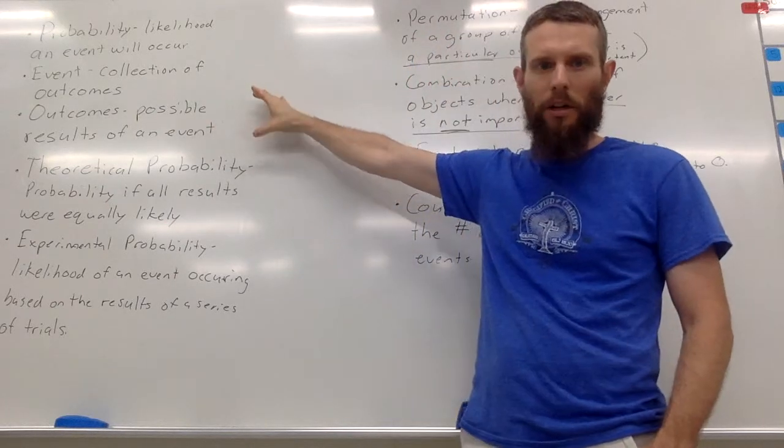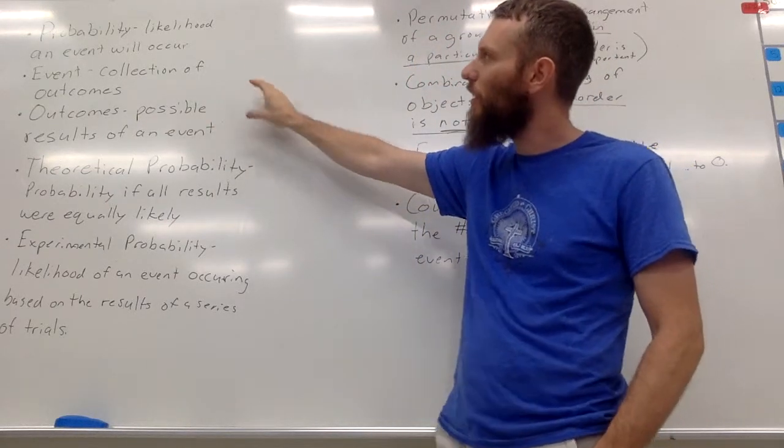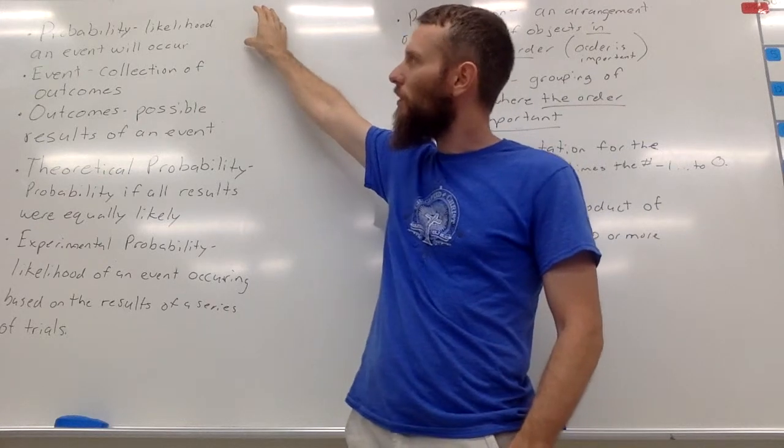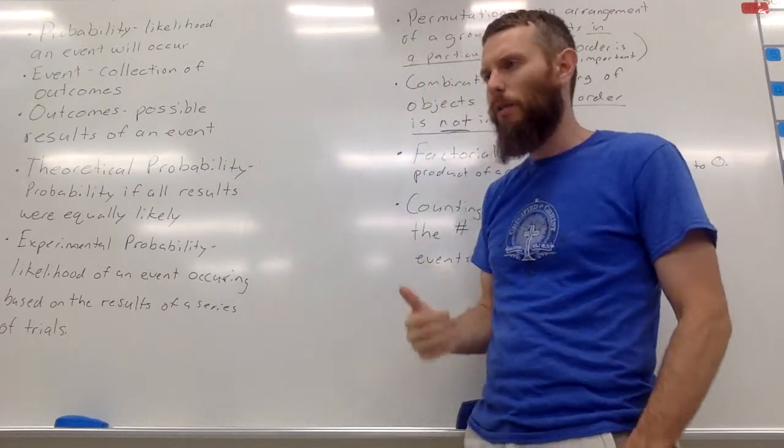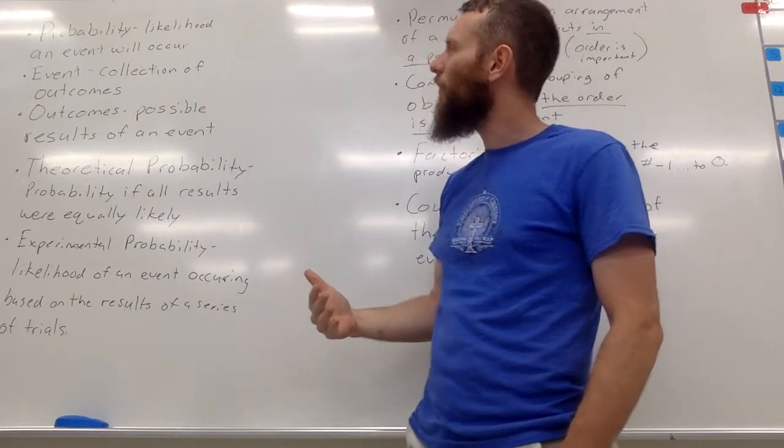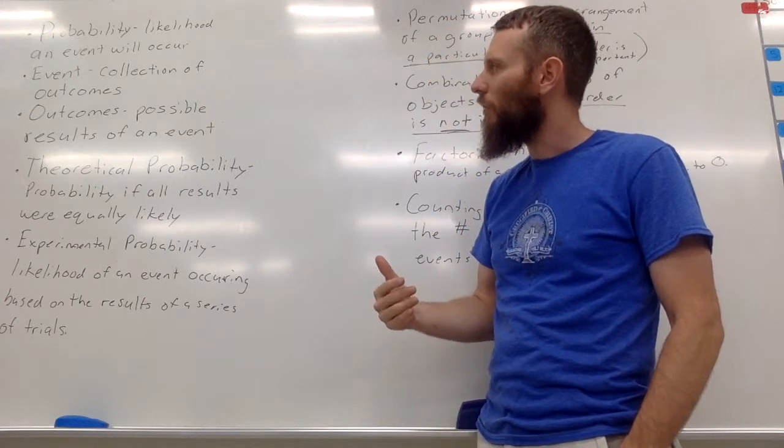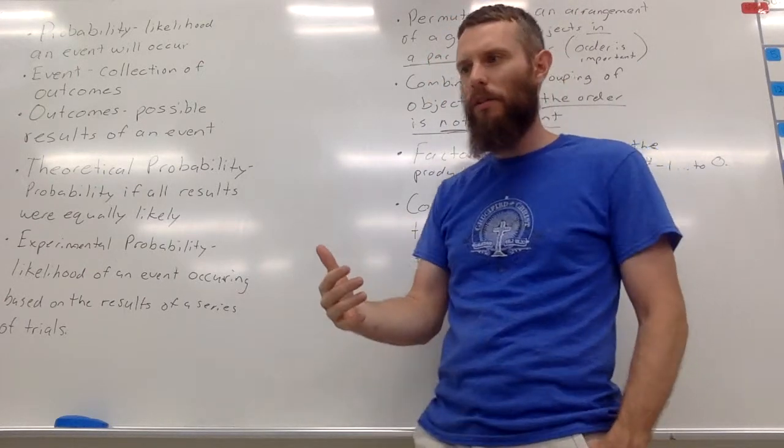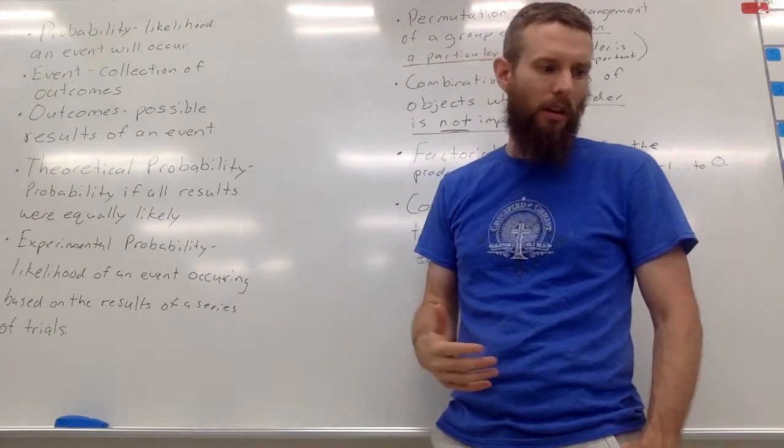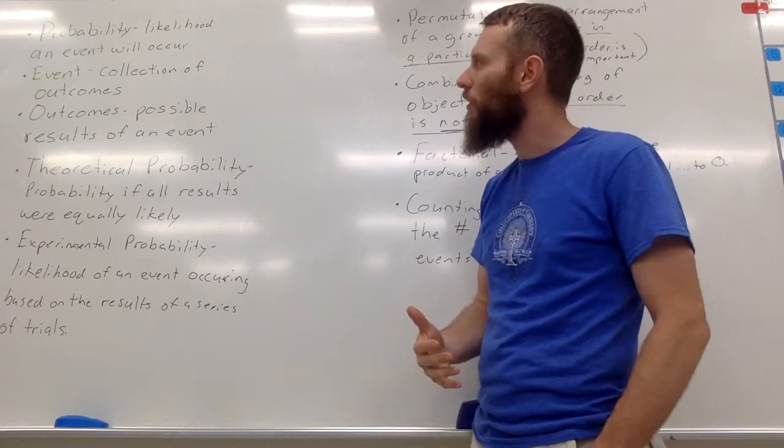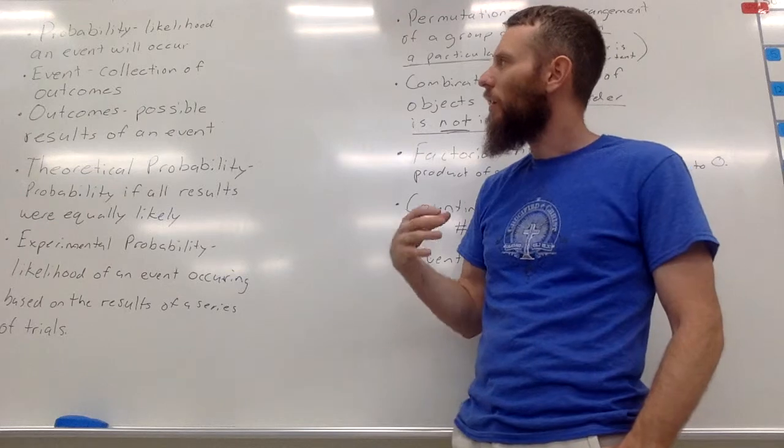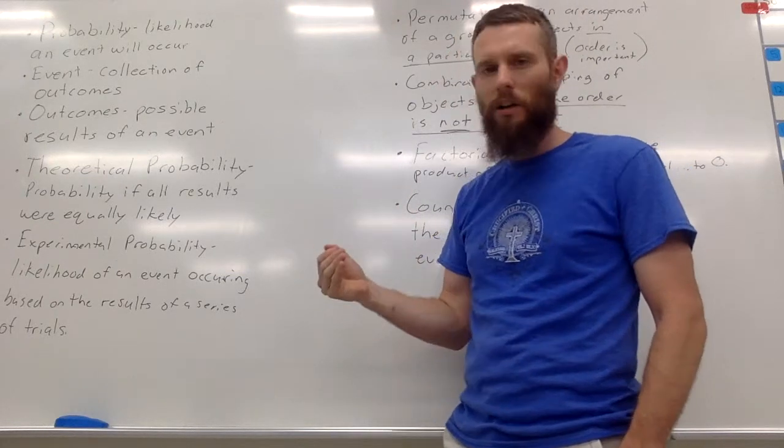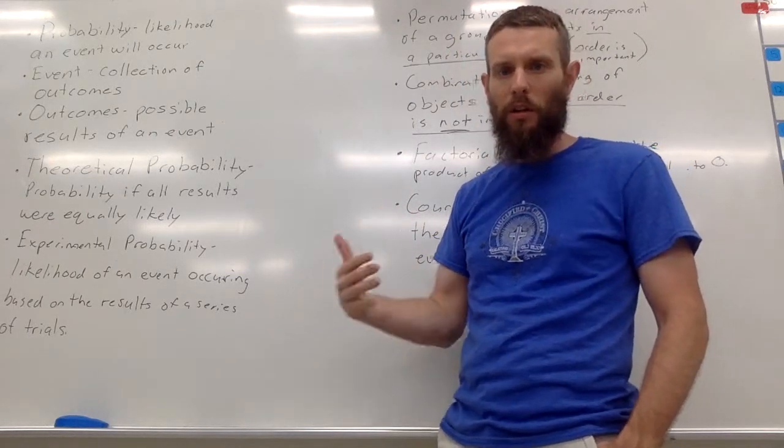The outcome is the possible results that can happen from that event. And the probability is, what is the likelihood that a specific, we usually refer to it as a positive outcome, or a, yeah, a positive outcome will result of, or a favorable outcome is another word that we use. Favorable outcome is the likelihood that a specific outcome that we determine will, in fact, happen.